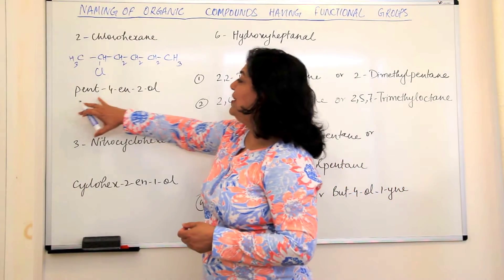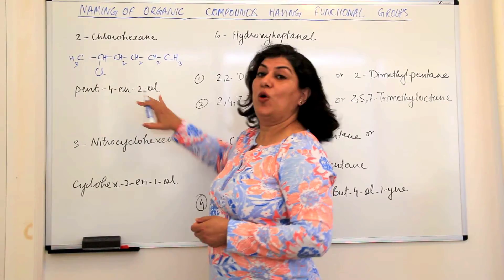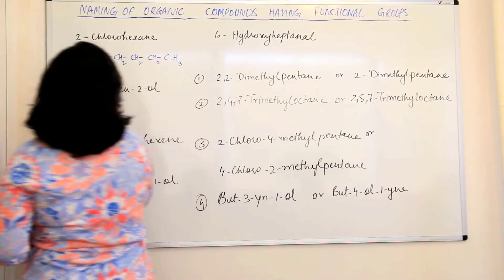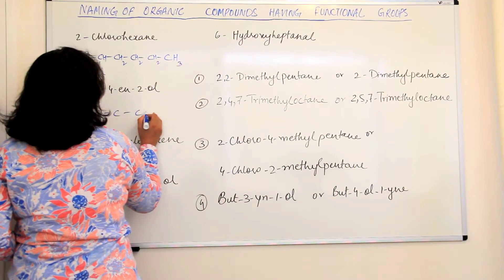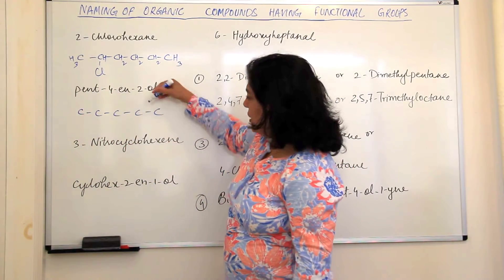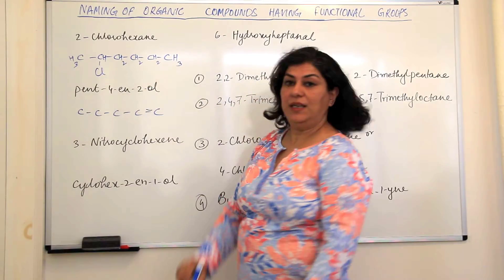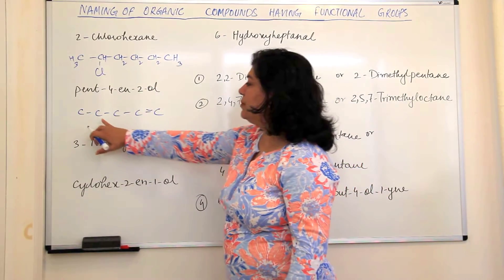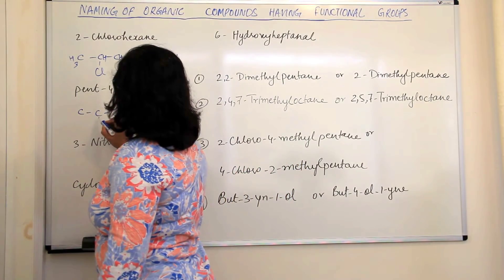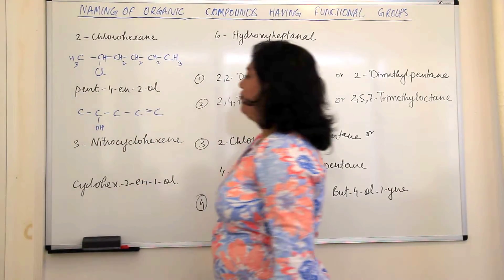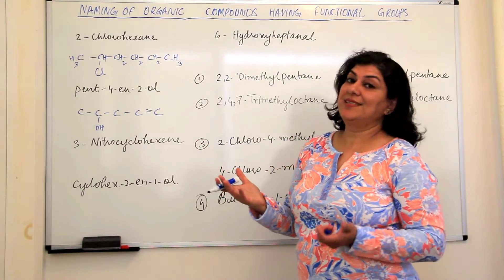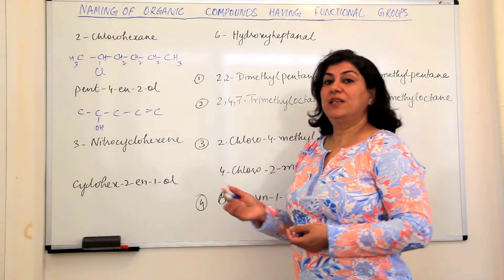Now we have pent-4n-to-all. Find the word root: pent. Make the five carbons first - one, two, three, four, five. Pent-4n: one, two, three, four. So this should be ene. So it is 4n and second carbon should be an all, meaning an OH is attached to the second carbon. If OH is attached to the second carbon and the fourth carbon has unsaturation, then this is the basic skeletal structure of the compound.